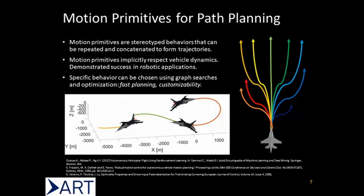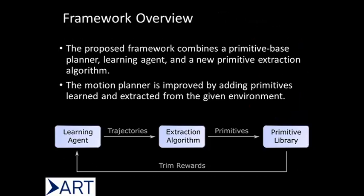The question remains: what is the best way to generate motion primitives? There are a number of ways to manually design motion primitives, such as recording pilot demonstrations or through optimal control methods. These methods can require significant time and knowledge of the vehicle's dynamics. Additionally, humans may be biased in their design of motion primitives. This work proposes an autonomous framework for learning motion primitives, which may replace or supplement motion primitives designed by a human expert.